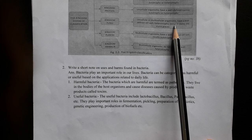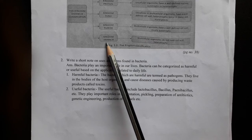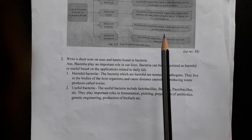Kingdom Plantae organisms are multicellular, have a well-defined cell wall, and are mostly autotrophs. Kingdom Animalia organisms are multicellular, do not have a cell wall, and are heterotrophs.